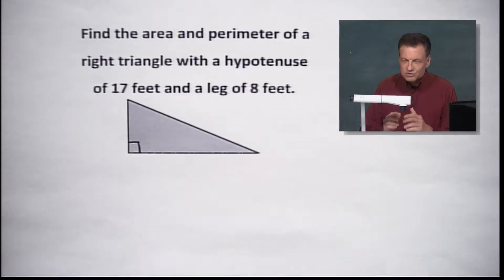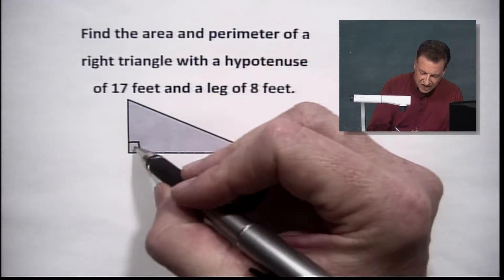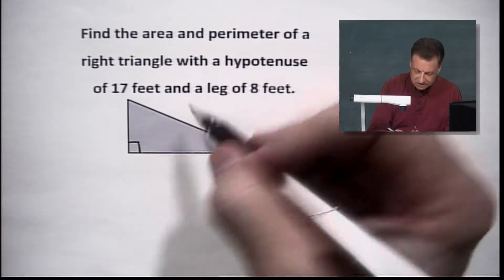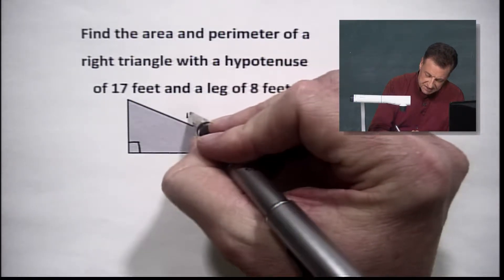Now, hypotenuse, remember, it's the longest segment of the triangle. It's also out here opposite, as we say, far away from the right angle. It's over here. So here it goes, 17.